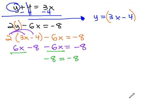This is interesting. The variables have subtracted out completely. What does this mean? Let's take a closer look. How often does negative 8 equal negative 8? Always.